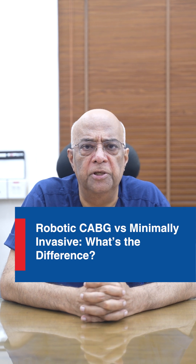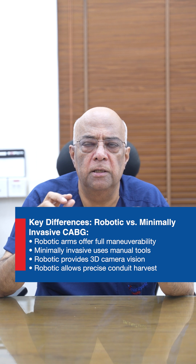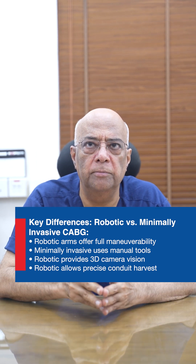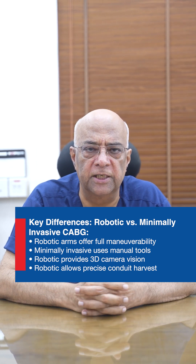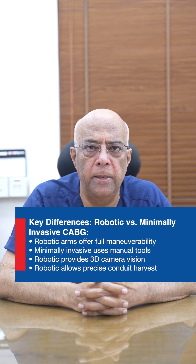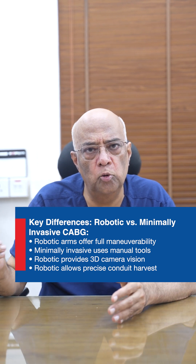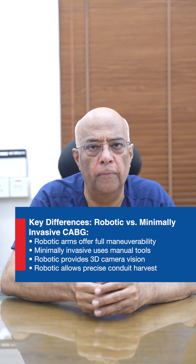What is robotic CABG? In robotic assisted CABG, the surgeon sits in the room, but before sitting on the console, he makes ports in the patient's chest. These ports are used to introduce robotic arms within the chest wall, which are then controlled by the surgeon sitting on a console on the side of the room.